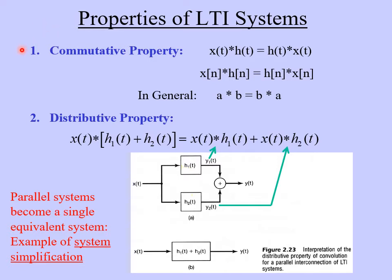The first one, which we introduced in the last video, is the commutative property. The commutative property means that if we reverse the orders of operation, we get the same result. We're talking about convolution here. So for an LTI system, it doesn't matter if we do the convolution of x with h or the convolution of h with x — we get the same result. This works for both continuous time and discrete time. In general, A convolution B is equal to B convolution A.